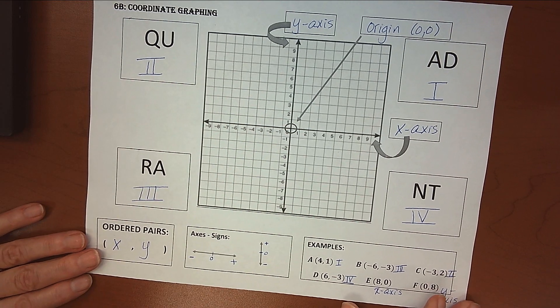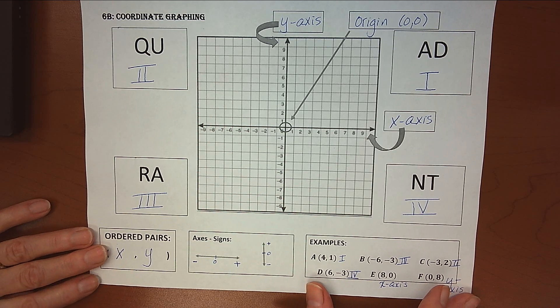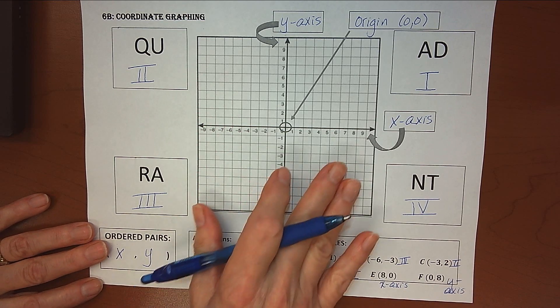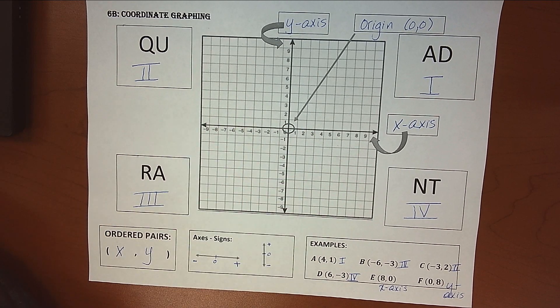All right, so that's a quick review of our coordinate graphing. In our next section, we'll review about graphing shapes onto our grid. So, you're done!